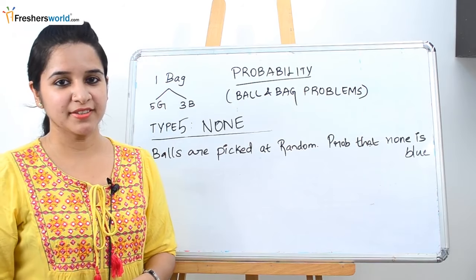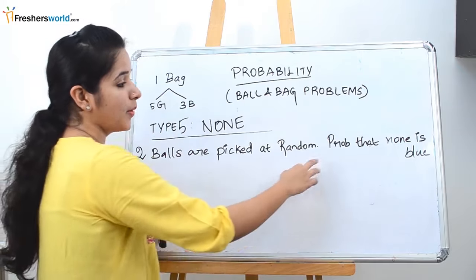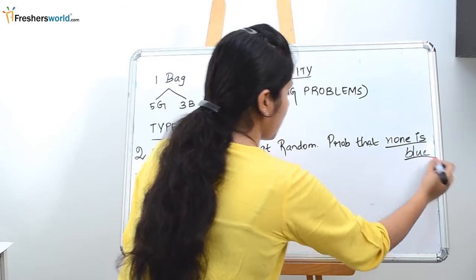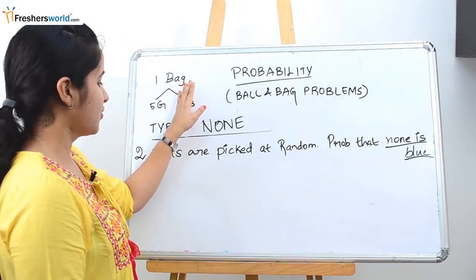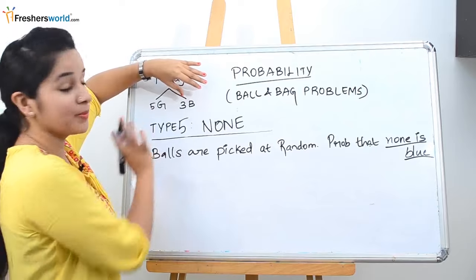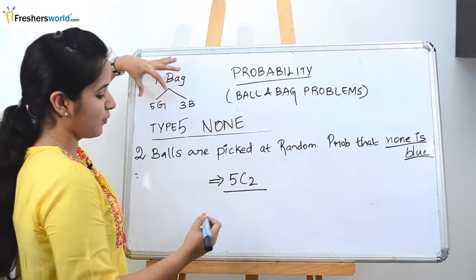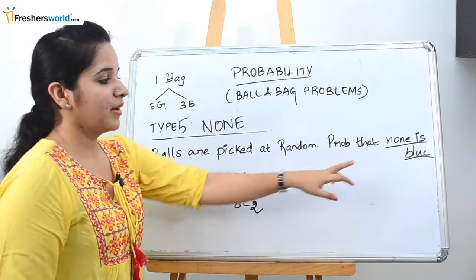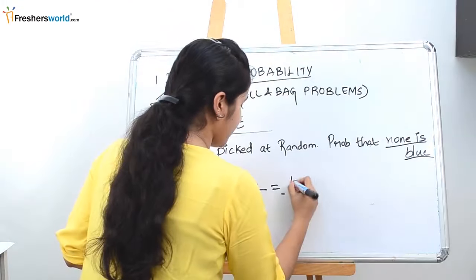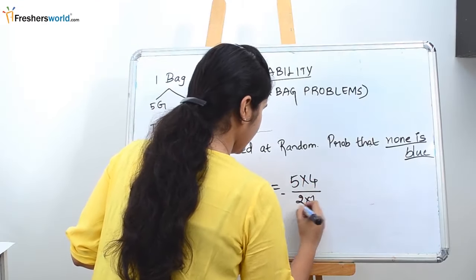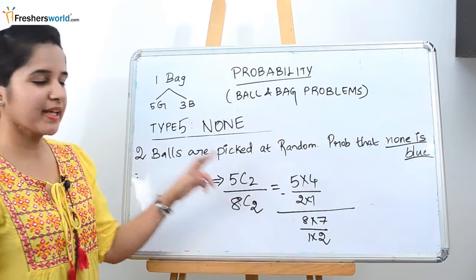Type 5 is the 'none' problem. The question: two balls are picked at random; find the probability that none is blue. Since none is blue, both balls must be green. So the answer is 5C2 divided by 8C2. Always remember: when 'none' appears, immediately omit the specified color. Solving: (5×4)/(2×1) divided by (8×7)/(1×2).